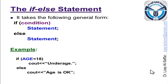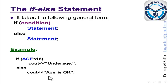We can write a more efficient program using the if-else statement. The else statement handles the case in which the condition is false. So if the condition is true, the following statement will be executed; otherwise, the second statement will be executed. For example, if the age is less than 18, then you are underage; otherwise, your age is okay. As you can see here, when the condition is false, it will directly go to the else statement and execute the statement following it.